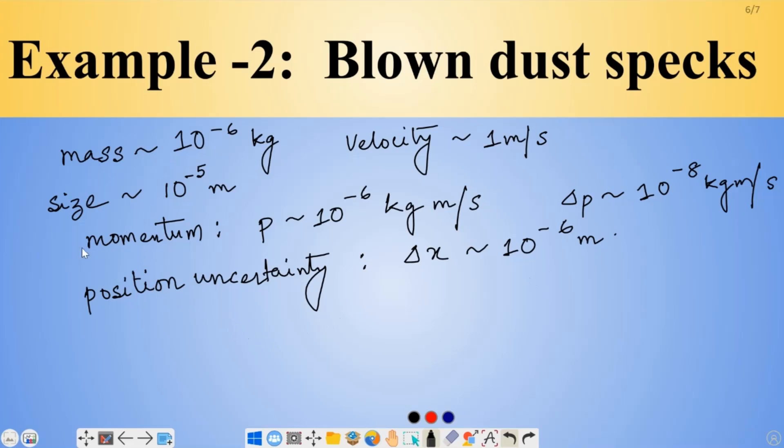Now, if we run that same calculation, delta p and delta x comes out to be 10 to the power minus 6 times 10 to the power minus 8 which is 10 to the power minus 14 kilogram meter square per second. This is a good factor of 10 to the power 20th larger than h-bar. So, this is solidly in the realm of classical physics. So, even something as really very very small as a speck of dust in the light breeze, it's still going to be classical.